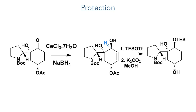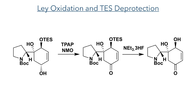The secondary alcohol produced by the Luche reduction was then selectively protected with triethylsilyl triflate, a group which is too bulky to also protect the tertiary alcohol present in the molecule. The acetate group was then cleaved to unmask the secondary hydroxyl group. With this secondary hydroxyl group now revealed, it was then oxidized to a ketone using a Ley oxidation. The TES group was then deprotected to produce the desired 1,2-trans-diol and complete the redox sequence.